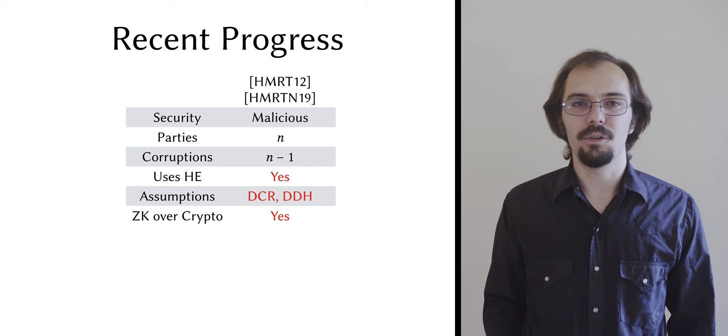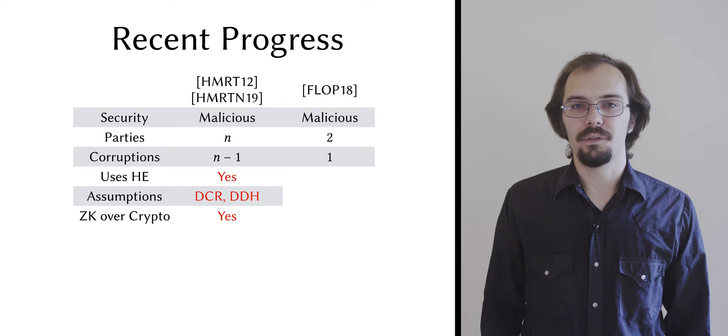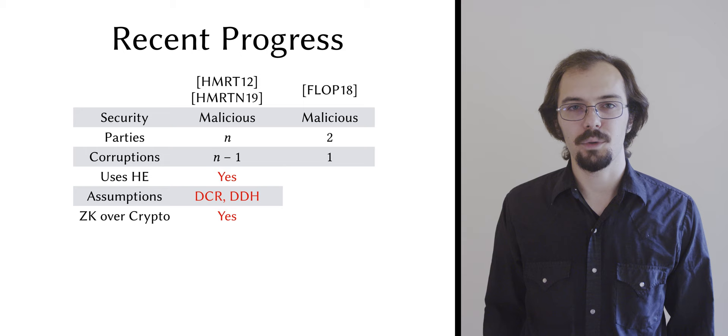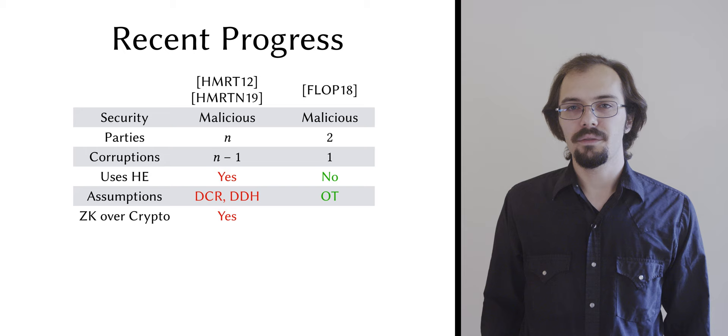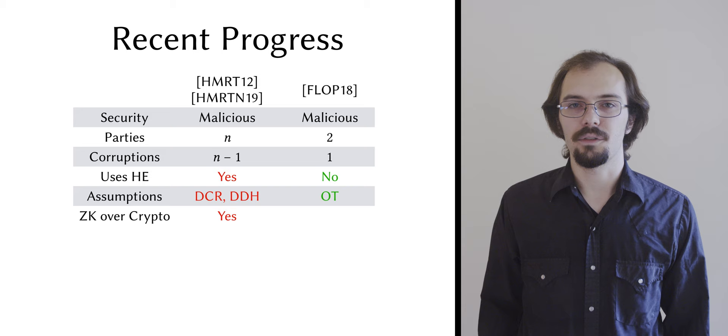On the other hand, the FLOP protocol focuses on the two-party case exclusively, and it's the first malicious secure protocol with concrete efficiency, which they demonstrated by implementing it. Instead of homomorphic encryption, it uses one of n oblivious transfer to implement trial division, and it uses one of two oblivious transfer to build a malicious Gilboa-style multiplier for multiplying p and q together.